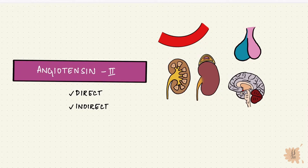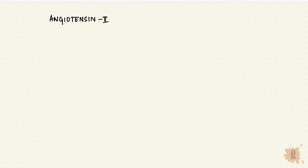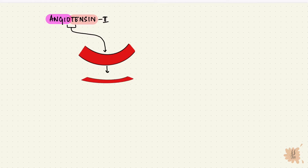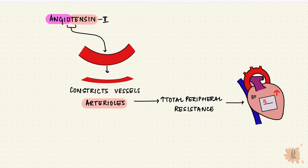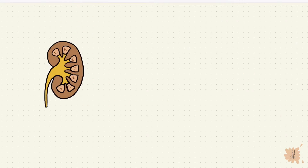First let's look at the direct effects. Angiotensin-2 has a type 1 receptor in blood vessels, and it constricts vessels — arterioles more — so it increases total peripheral resistance and therefore blood pressure.